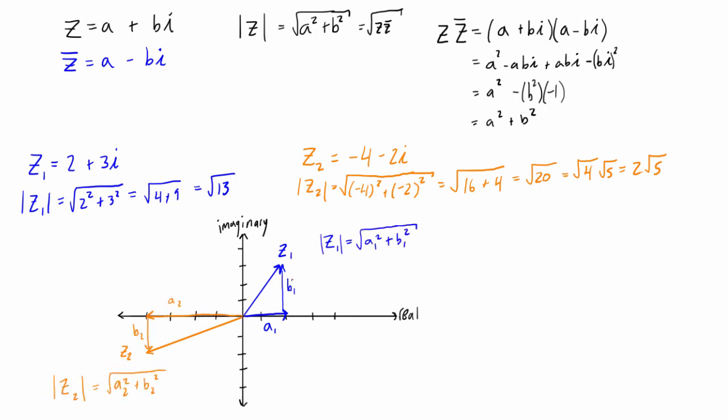And if we imagine that the imaginary part of these numbers was equal to zero, so let's say that z1 was only equal to its real part a1, then the modulus in this case of z1 would just be equal to the square root of a1 squared.